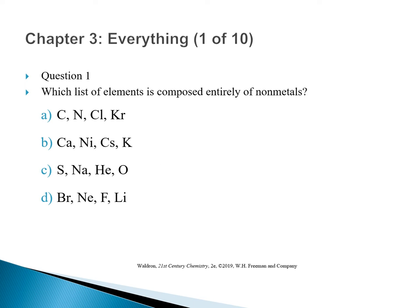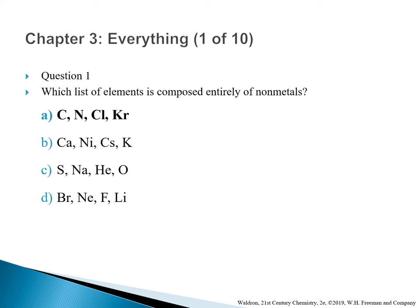Question 1: Which list of elements is composed entirely of non-metals? A. Carbon, nitrogen, chlorine, and krypton. B. Calcium, nickel, cesium, and potassium. C. Sulfur, sodium, helium, and oxygen. D. Bromine, neon, fluorine, and lithium. The correct answer is A — carbon, nitrogen, chlorine, and krypton. Non-metals are located to the right-hand side of the staircase in the periodic table. Choice B are all metals. In choice C, sodium is a metal. In choice D, lithium is a metal. Therefore, only choice A is all non-metals.